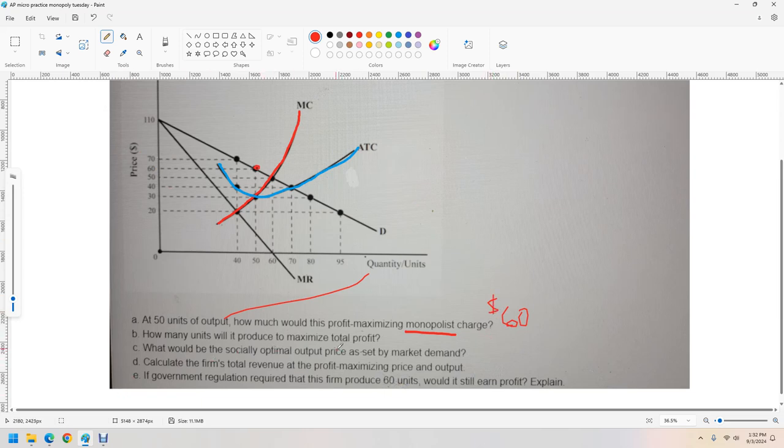How many units will it produce to maximize total profit? That's asking what is the profit maximizing output. That is the quantity where marginal revenue equals marginal cost. Just follow where the marginal cost curve is down to where it hits marginal revenue. The units here is 40. But if it asks for the profit maximizing price, follow that up to where it hits the demand curve, and that would be 70.